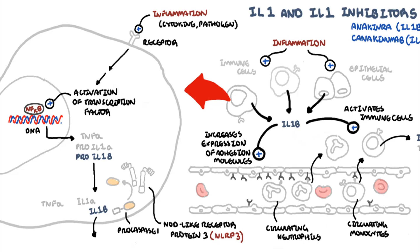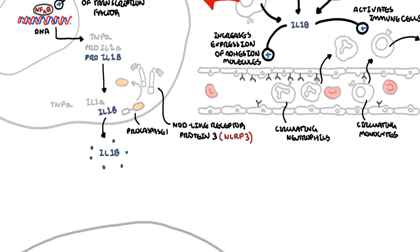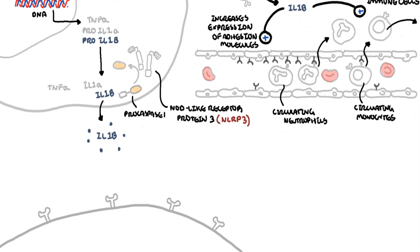Interleukin-1b is released from the cell and will target these other cells around the area. For example, it will target another immune cell here. Now, this target cell will have interleukin-1b receptors on its cell surface, and so when interleukin-1b binds onto interleukin-1b receptors, it will again trigger a cascade of intracellular events within that cell, which will essentially result in the things we described earlier, depending on the cell target. But in summary, interleukin-1b is a potent pro-inflammatory cytokine.